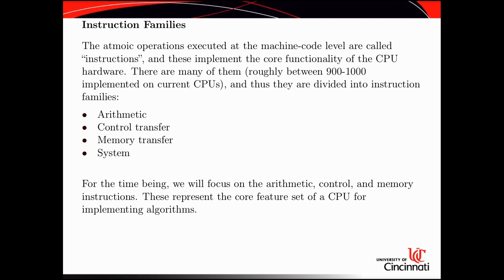The next family is control transfer instructions — the ones that modify the instruction pointer or the program counter. This is where jump instructions and branching instructions live, as well as call instructions for making function calls. For an if statement, there's a conditional jump, which we will get into later. That's a control transfer instruction.